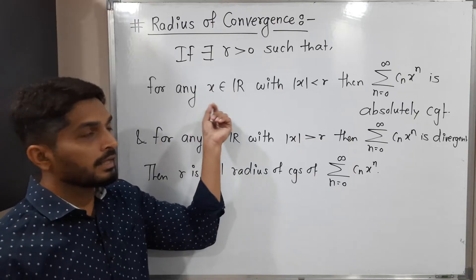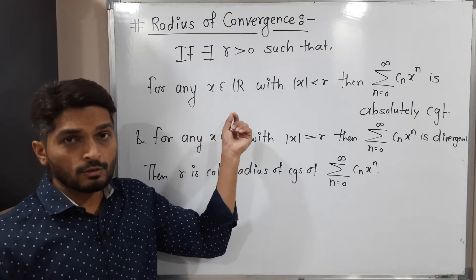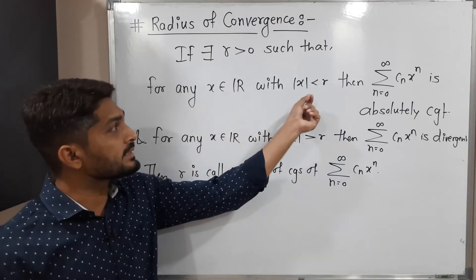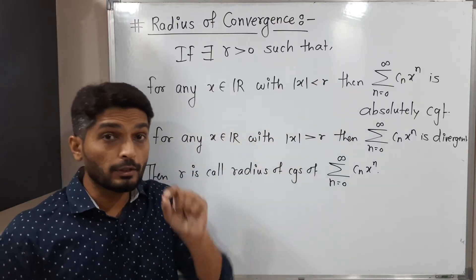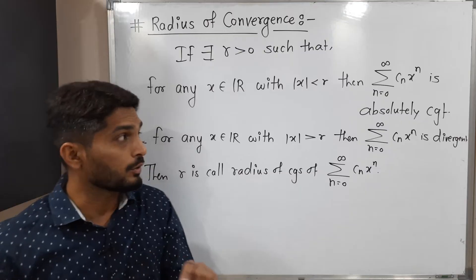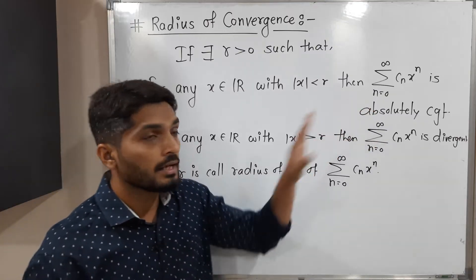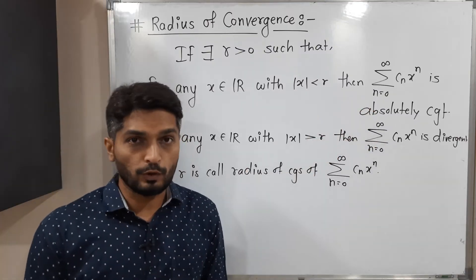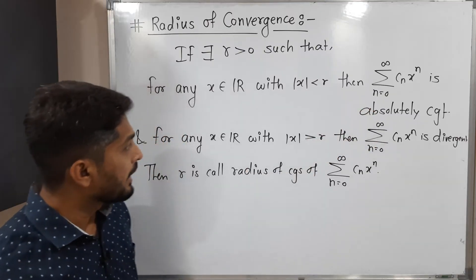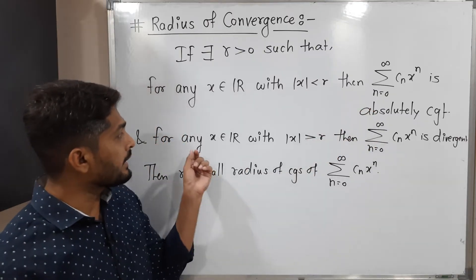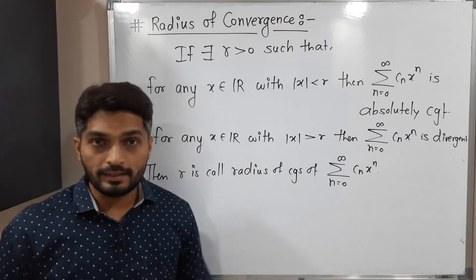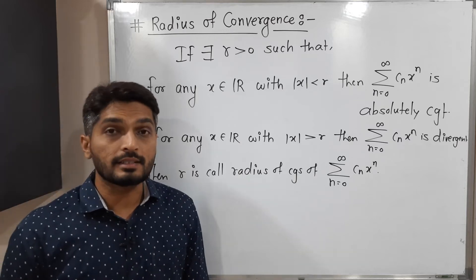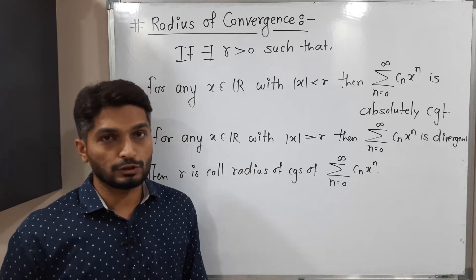So if you take any real number x whose modulus is less than r, then for that particular value of x the series is absolutely convergent. And if you take any real number whose modulus is greater than r, then the series is divergent.